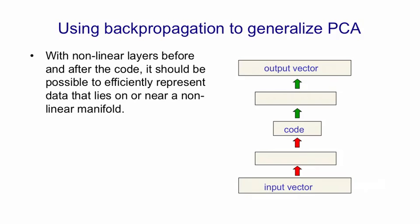Then there'll be a code layer, which might be linear units. And then following the code layer, there'll be one or more layers of non-linear hidden units. And then there'll be an output vector, which we train to be as similar as possible to the input vector.